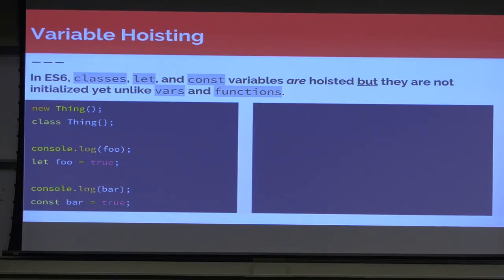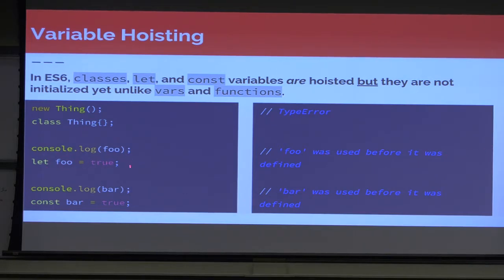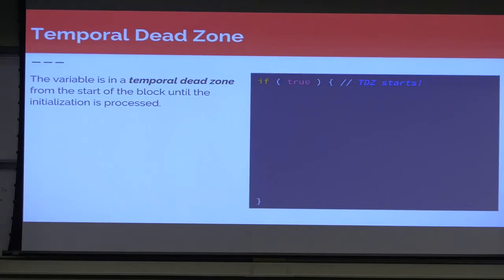So if we were to try to run this, we'd get a type error for our class because it has not been created yet. We get an error that says foo is used before it was defined, and that's exactly what happens. The same thing occurs with a const variable as well. That's something you want to look out for when you're using ES6.